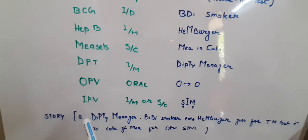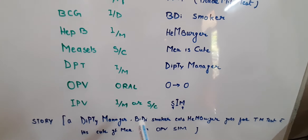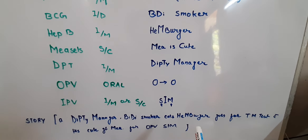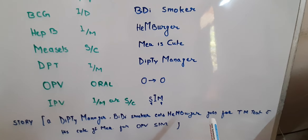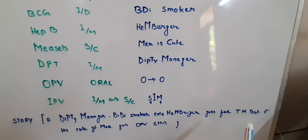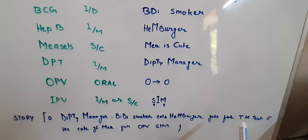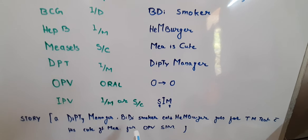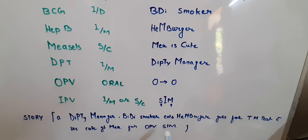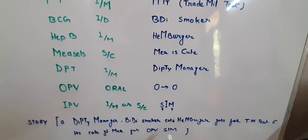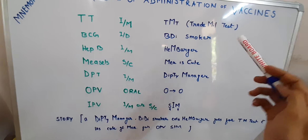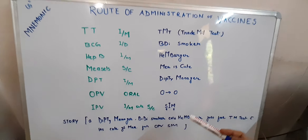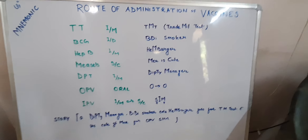Here is the short story: A deputy manager who is a BD smoker and eats hamburgers develops hypertension, so he visits a cardiologist who advises a Treadmill Test. He also does cardio exercise on the treadmill. His cute girlfriend Mia goes with him, and they operate a SIM — like the SIM we use in mobile. So remember: Treadmill Test, BD smoker, hamburger, Mia is cute, Deputy Manager, O for oral OPV, and SIM.